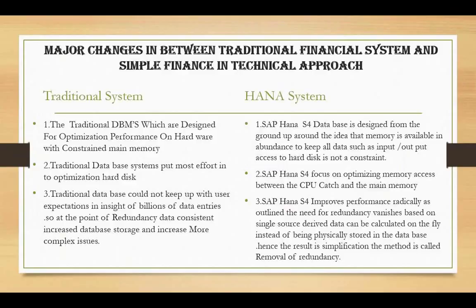SAP HANA S/4 database is designed from the ground up with the idea that enough memory is available to keep all data, so input/output access to hard disk is not constant - meaning less pressure on the disk. Traditional database systems put most effort into optimizing hard disk access, whereas SAP HANA S/4 focuses on optimization of memory access between CPU cache and main memory.